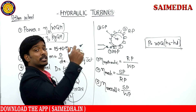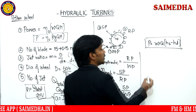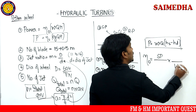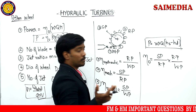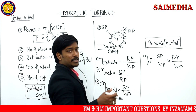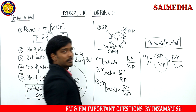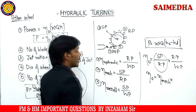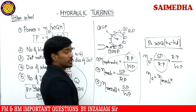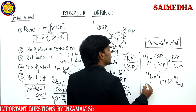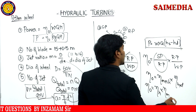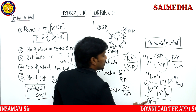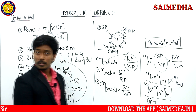So overall efficiency: input is water power, output is shaft power. Overall efficiency = shaft power / water power. If you add runner power in between — runner power cancels out — and you still get overall efficiency. So overall efficiency η_O = η_H × η_M, that is hydraulic efficiency multiplied by mechanical efficiency.